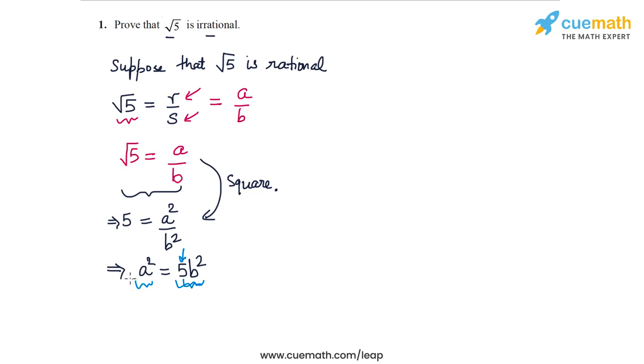And the result I'm using here is theorem 1.3, theorem 1.3 from the NCERT textbook, which says that if p is a prime number which divides a square, then p must divide a as well. So in this case, because 5 divides a square, then 5 must divide a as well.